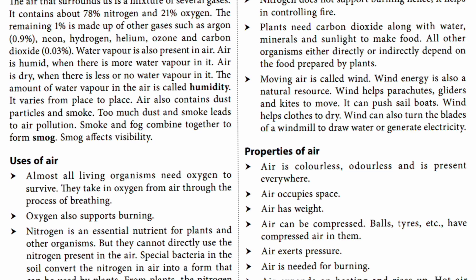Plants need carbon dioxide along with water, minerals, and sunlight to make food. All other organisms either directly or indirectly depend on the food prepared by plants. Moving air is called wind, and wind energy is also a natural resource. Wind helps parachutes, gliders, and kites to move, and can push sailboats. Wind helps clothes dry, and can turn the blades of a windmill to draw water or generate electricity.